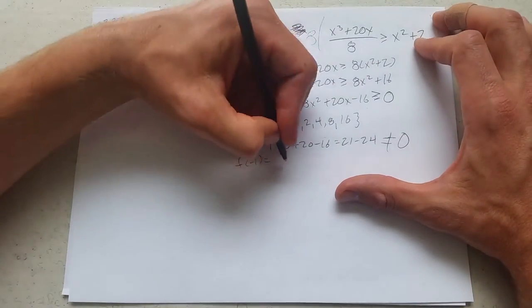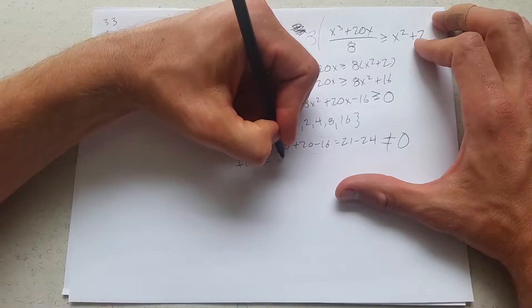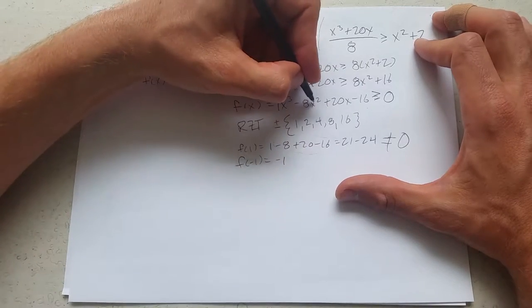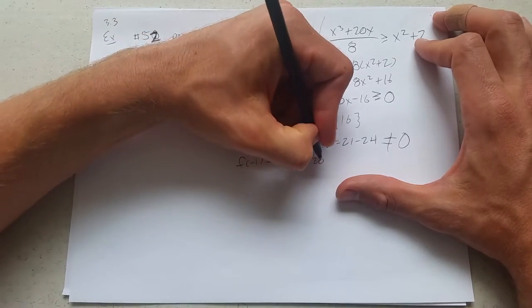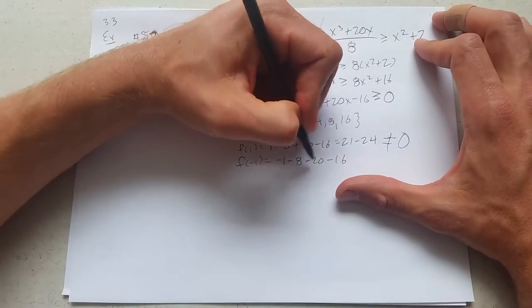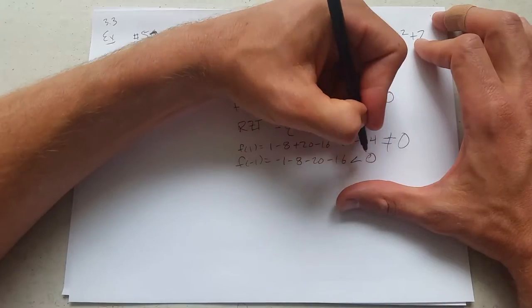Moving on, f of negative 1. So we have negative 1 cubed is negative 1. Negative 1 squared is positive 1. Minus 20 minus 16. This is very negative. Also not 0.